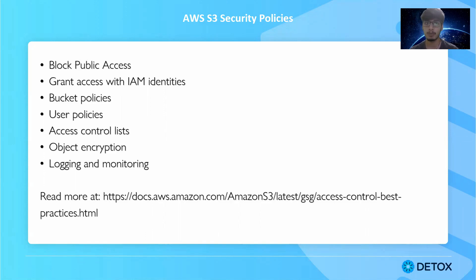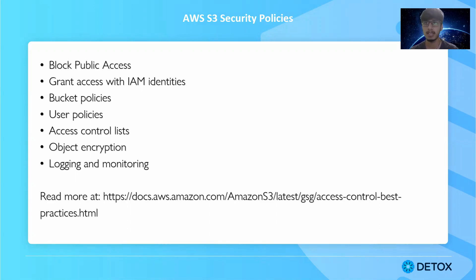They can grant access using IAM identities — Identity and Access Management — which defines what users can access what resources. Assume multiple user role levels: admin, moderator, editor, and guest. An admin user has access to anything on that AWS instance — creating, destroying, and uploading to S3. A moderator might have limited permissions, only able to write data but not delete or modify existing data. A guest user might only be able to read a particular file.